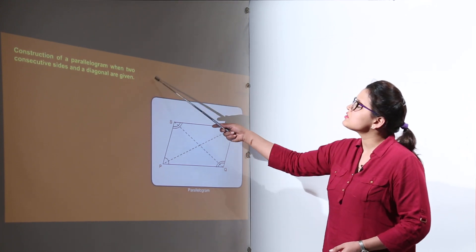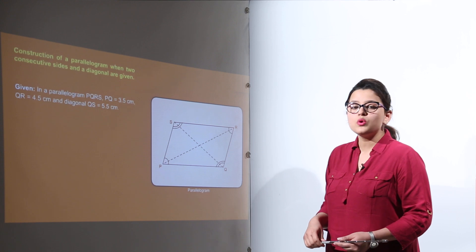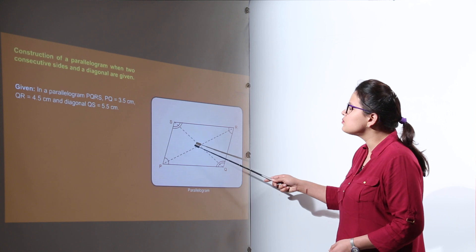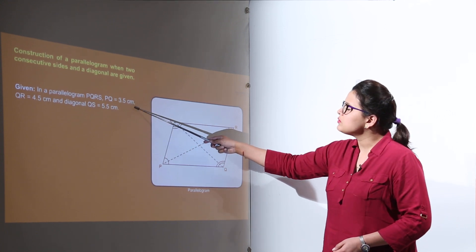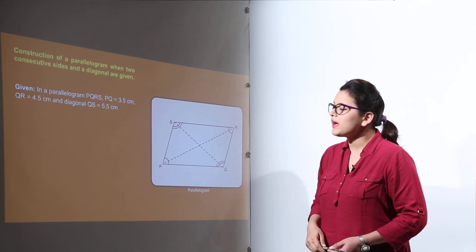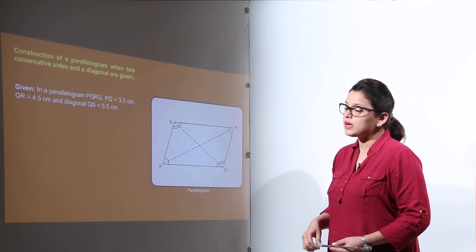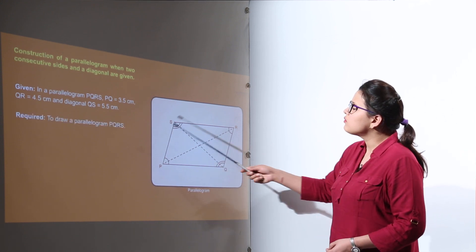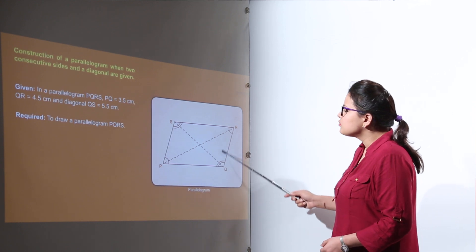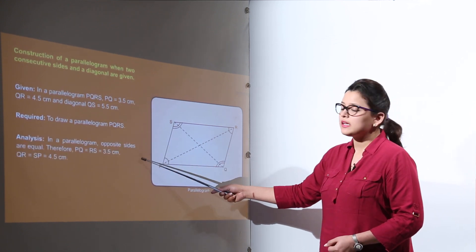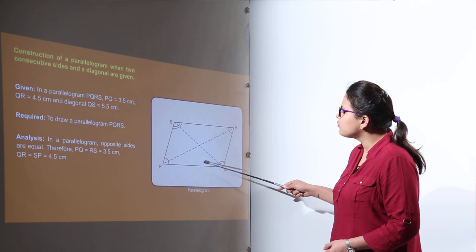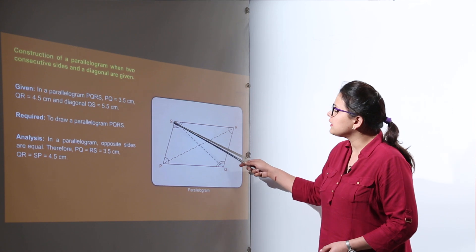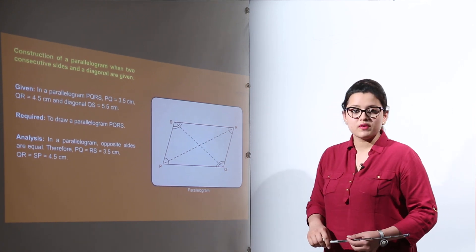The next case is the construction of a parallelogram when two consecutive sides and one diagonal are given. Here parallelogram PQRS is to be made with measurements PQ equal to 3.5, QR equal to 4.5, and diagonal QS equal to 5.5 centimeters. The analysis is that opposite sides are equal, so PS is equal to QR, and we are given the diagonal measurement QS equal to 5.5 centimeters.